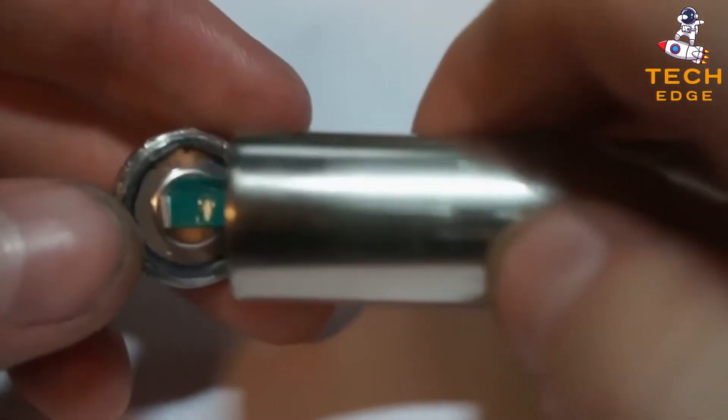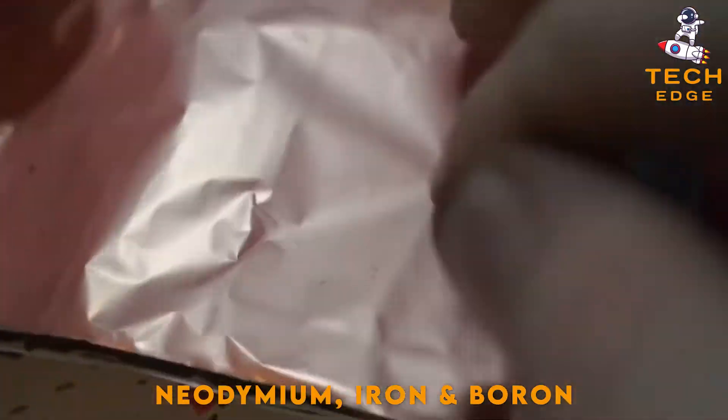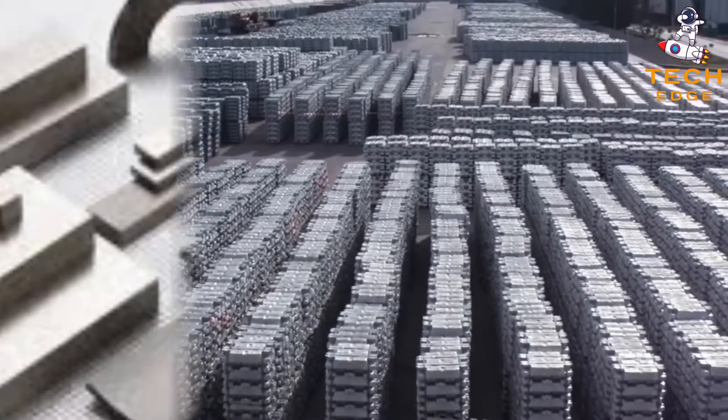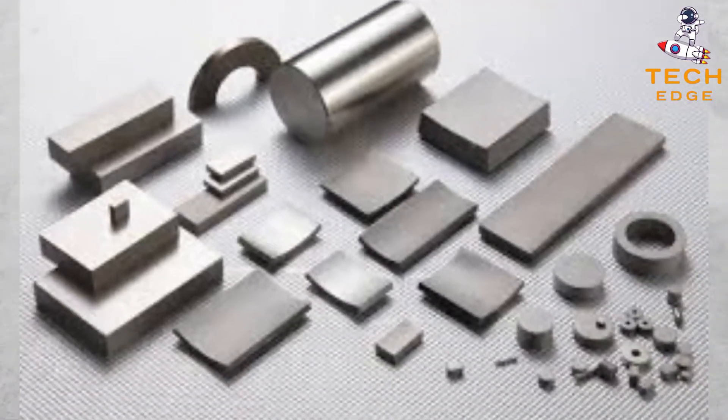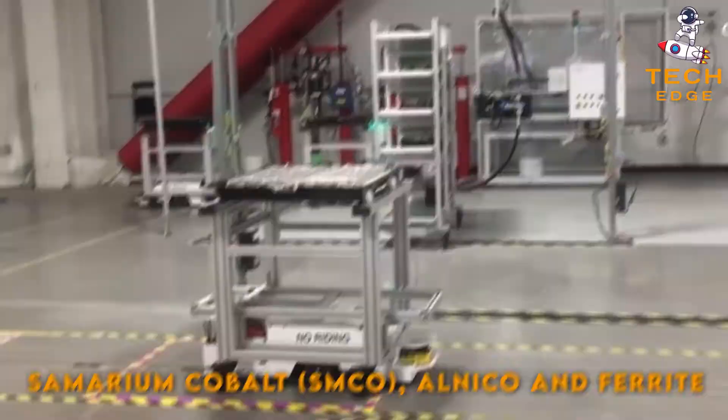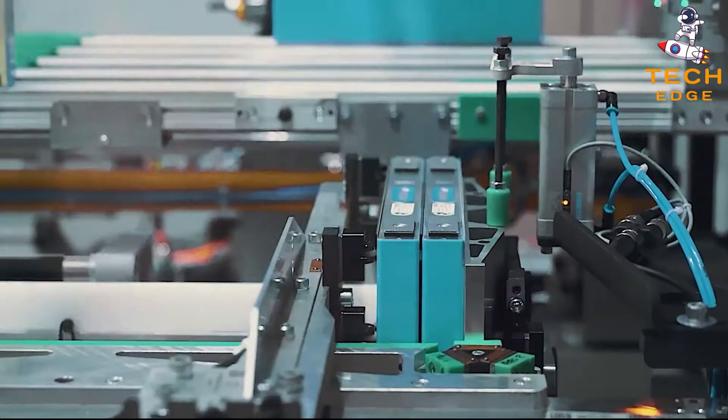Neodymium magnets are permanent magnets made of neodymium, iron, and boron. They are from the rare earth magnet family and have the highest magnetic properties of all permanent magnets, stronger than samarium cobalt, alnico, and ferrite. In addition to their high magnetic strength, they are relatively inexpensive.